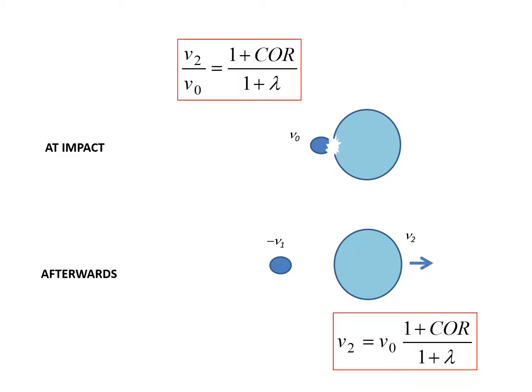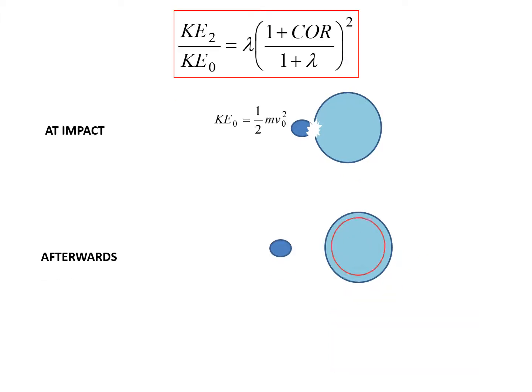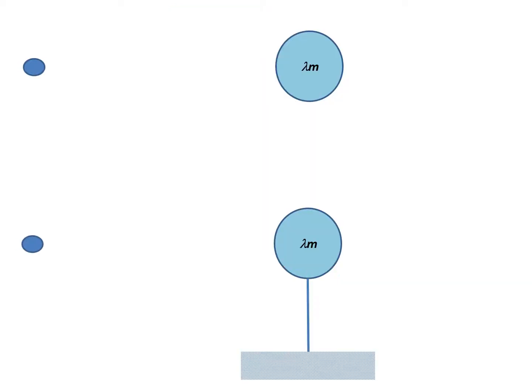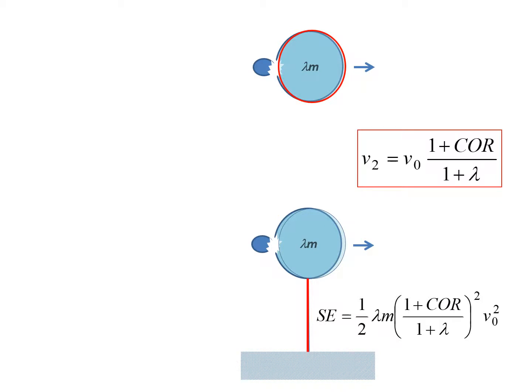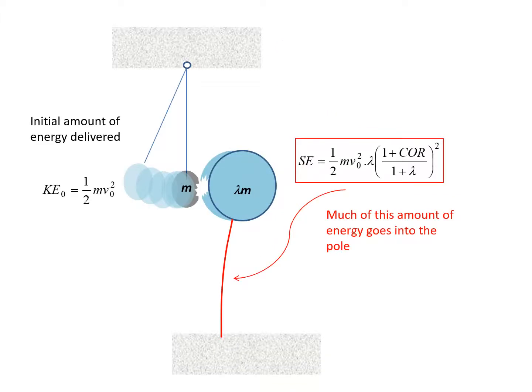The expression that we have derived enables us to calculate velocity v2 of the target right after the impact. The amount of kinetic energy which is developed into the target right after the impact is also found. If the target is supported by a pole, then the kinetic energy k2 is then translated into the strain energy absorbed by the pole. It is now shown that only a fraction of the kinetic energy delivered by the impact is absorbed as strain energy by the pole.